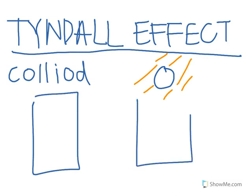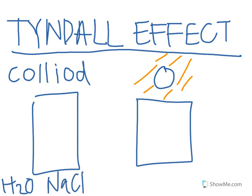There's a difference. So let's say you have two beakers — one of them has water and sodium chloride, and the other one has water and gelatin. Which one's the solution? Well, you use the Tyndall effect by shining a bright light.